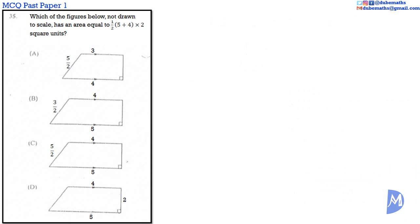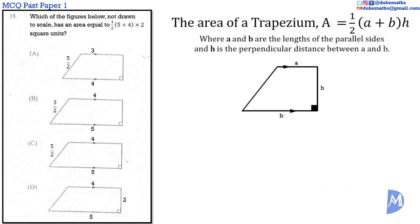Question 35. The area of a trapezium is equal to one-half (a + b) times h, where a and b are the lengths of the parallel sides and h is the perpendicular distance between them. We are given that the area equals one-half (5 + 4) times 2. This means the two parallel sides have lengths of 5 units and 4 units, and the perpendicular distance between them is 2. Therefore, the answer is D.